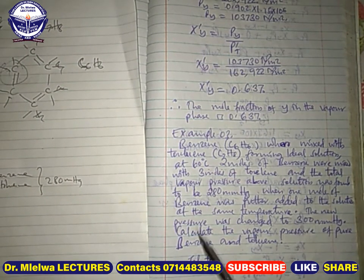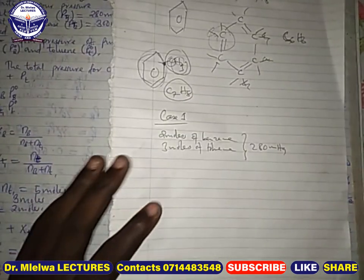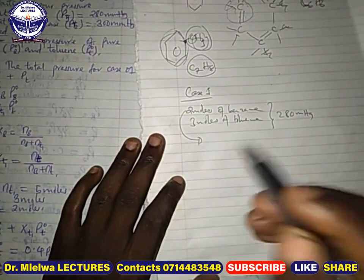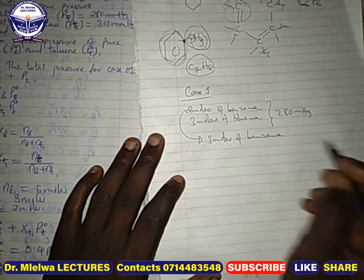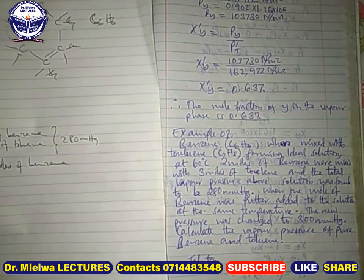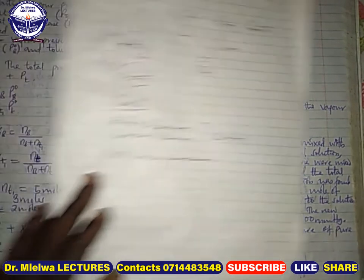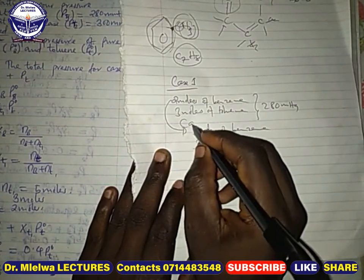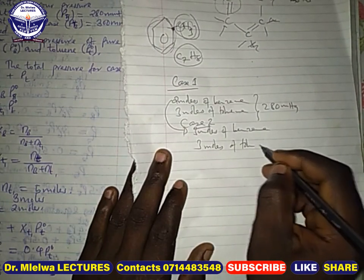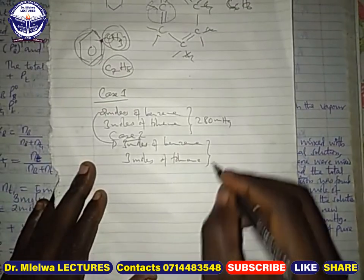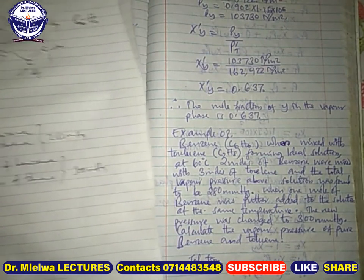In case two, one mole of benzene was further added to the solution. So the number of moles of benzene becomes three moles, while the number of moles of toluene remains three moles. At the same temperature, the new total pressure was found to be 300 mmHg.